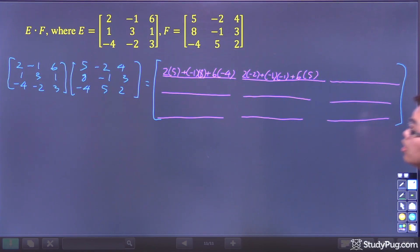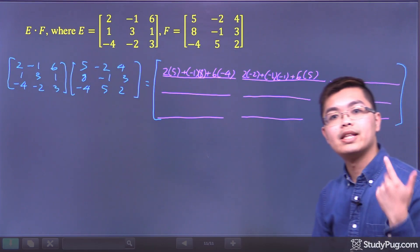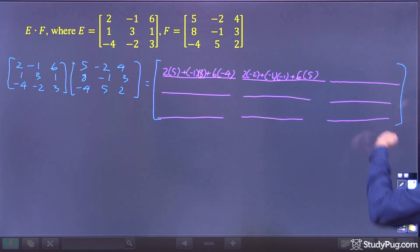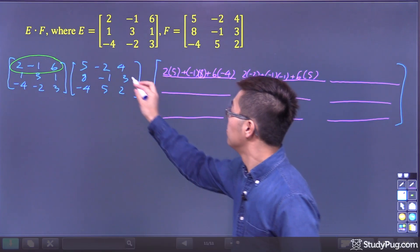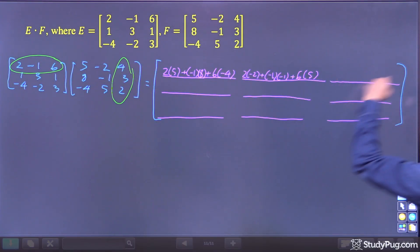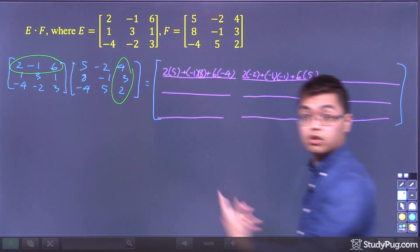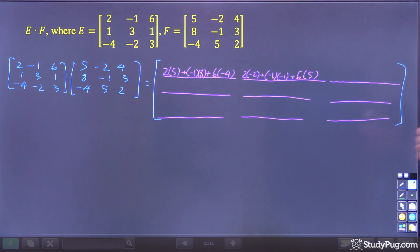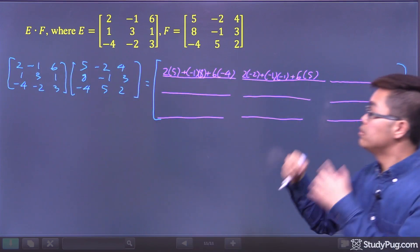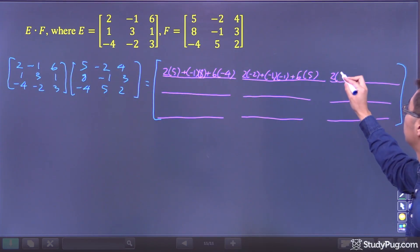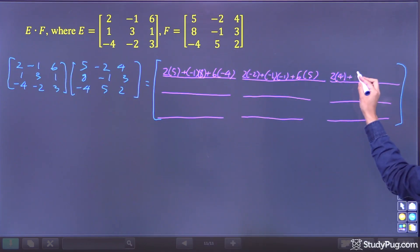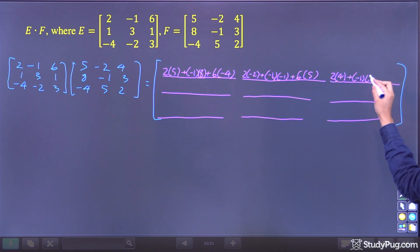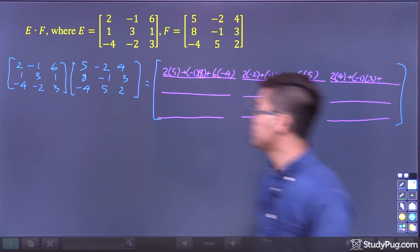The next entry is in the first row and third column, so we take the dot product of the first row and third column. That gives us: 2 times 4, plus negative 1 times 3, plus 6 times 2.